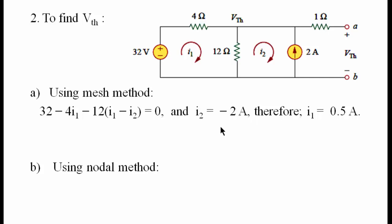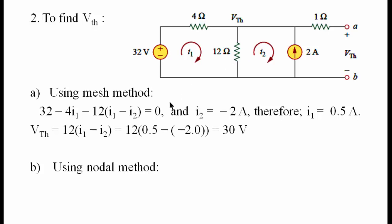By substituting this value in the equation, we get the value of I1, which is 0.5 amperes. Since we have I1 and I2 now, we can find the Thevenin's voltage by writing: V-Thevenin equals 12, the value of the resistance, multiplied by I1 minus I2, because both I1 and I2 contribute to the current flowing in the 12 ohms resistance. And by solving, we get the Thevenin's voltage, which is 30 volts.